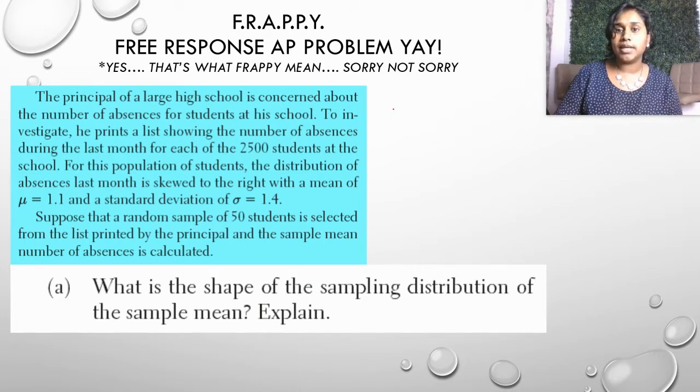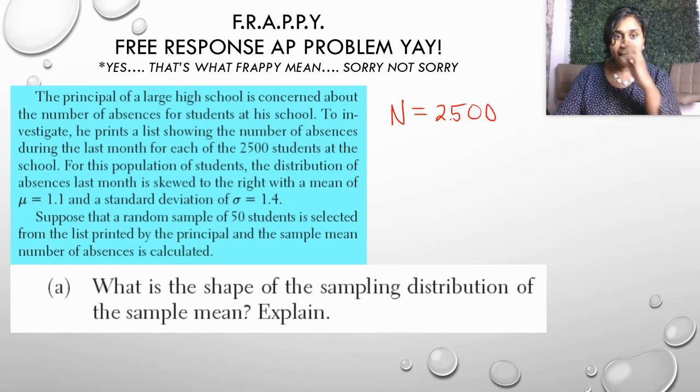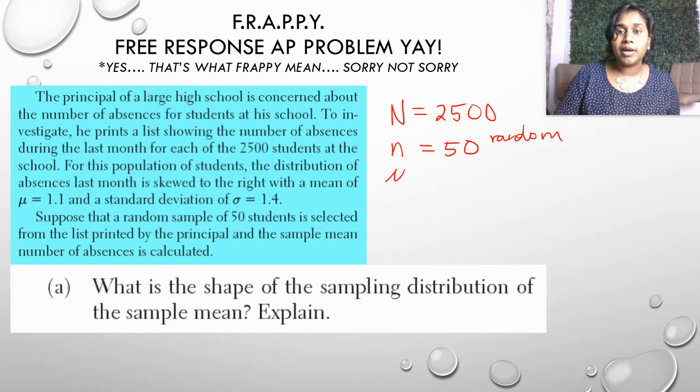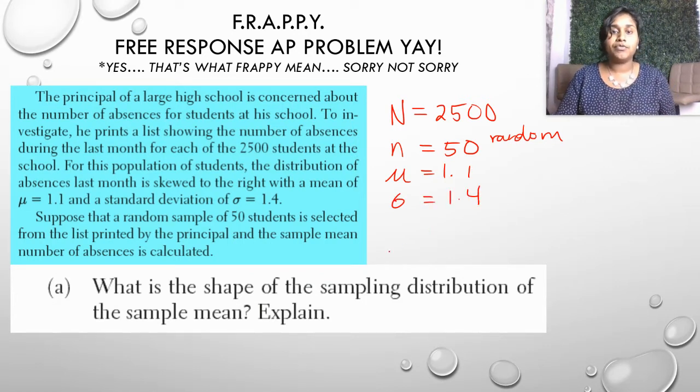We have a bunch of information we need right in there. We need to know that our population is 2,500. We have a sample size of 50. It is random. Lots of awesome words right there. We have a population mean of 1.1 and a population standard deviation of 1.4.